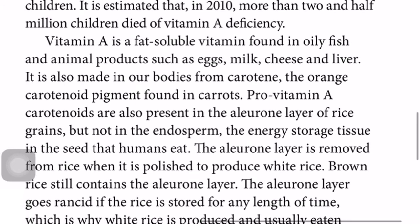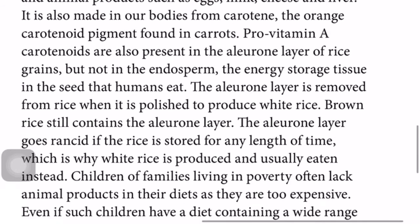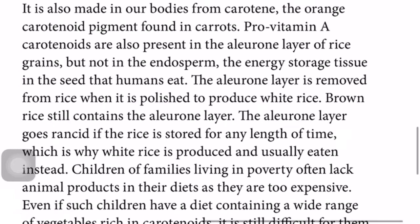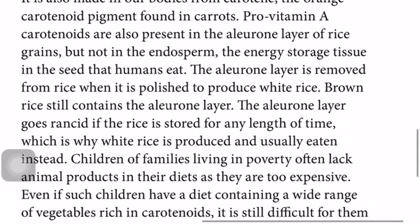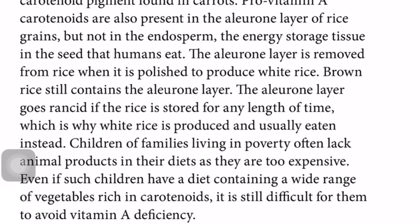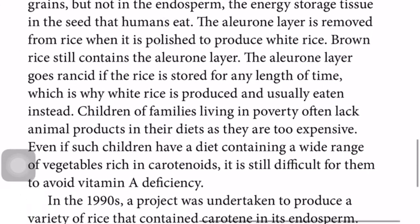Vitamin A is a fat-soluble vitamin found in oily fish, animal products such as eggs, milk, cheese, and liver. It is also made in our bodies from carotene — the orange carotenoid pigment found in carrots. Pro-vitamin A carotenoids are also present in the aleurone layer of rice grains, but not in the endosperm — the energy storage tissue in the seed that humans eat.